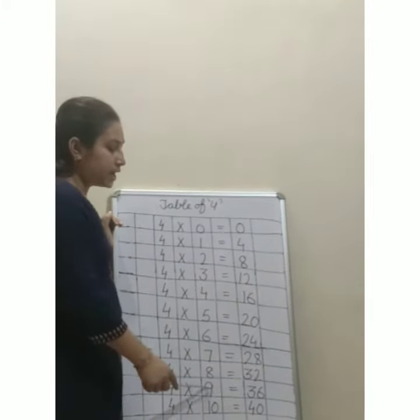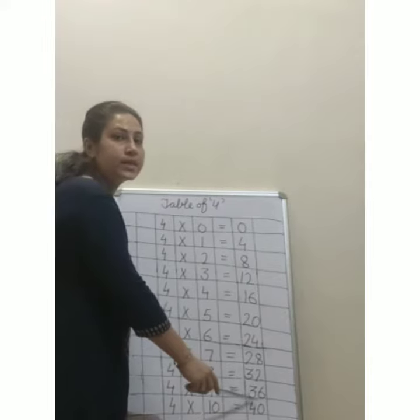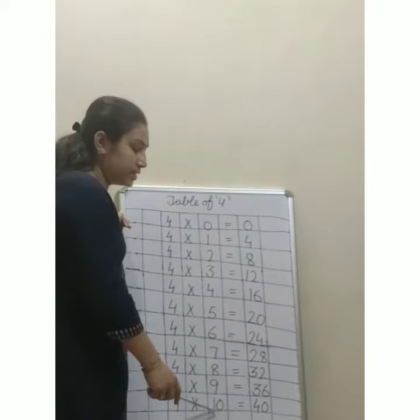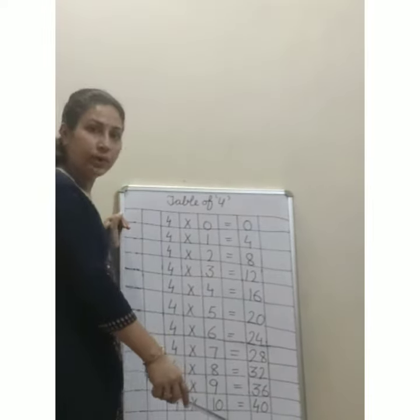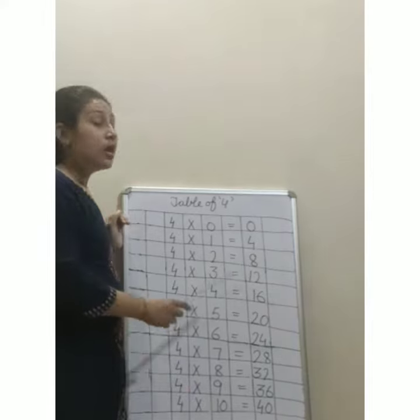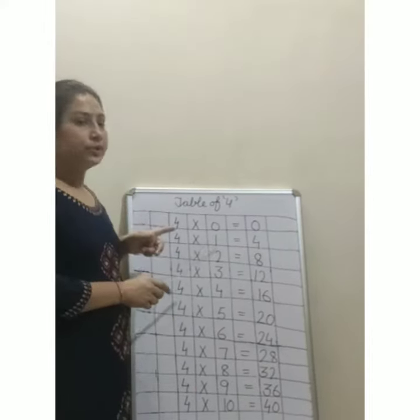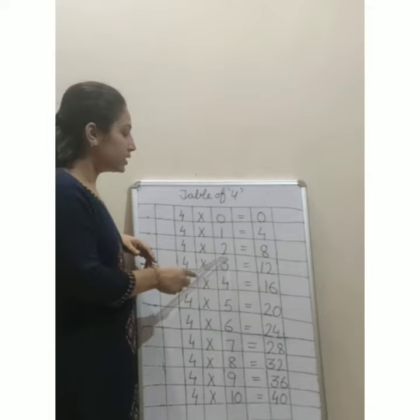4 nines are 36, 4 tens are 40. Okay dear kids, every digit jo hai woh niche touch hona chahiye.